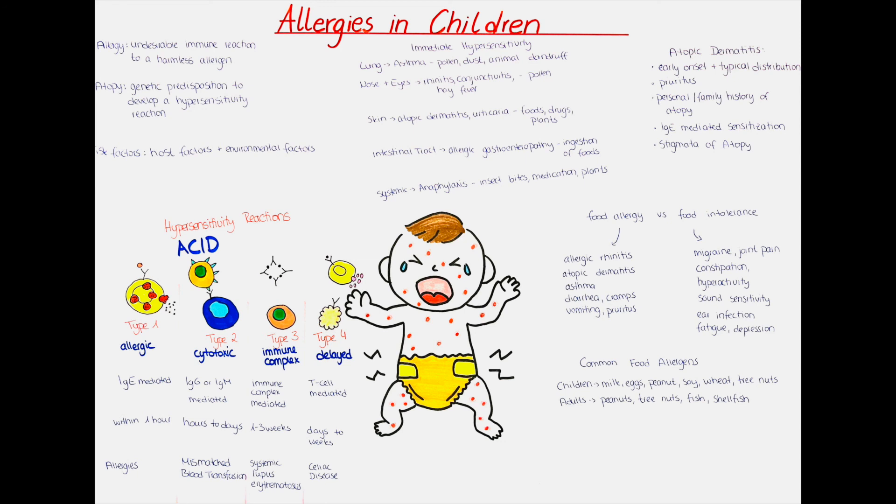Disability: here we check for the patient's level of consciousness. Is the patient alert, verbal, in pain or unresponsive? A more detailed assessment can be done using the Glasgow Coma Scale. Exposure: here we want to check for a rash, angioedema, and maybe if some potential allergen is in the vicinity of the patient.